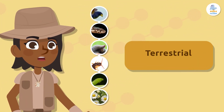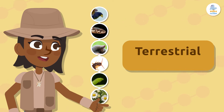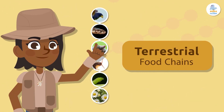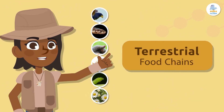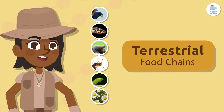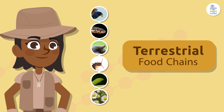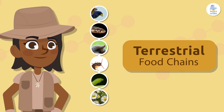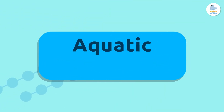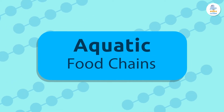All these living things obtain their food in terrestrial habitats, so we can say that this is a terrestrial food chain. Aquatic food chains!